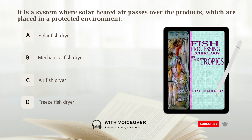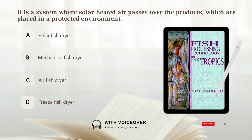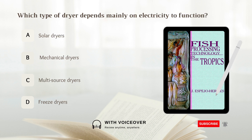It is a system where solar heated air passes over the products, which are placed in a protected environment — this describes a solar dryer. What type of dryer depends mainly on electricity to function? A. Solar dryers. B. Mechanical dryers. C. Multi-source dryers. D. Freeze dryers. The answer is B, mechanical dryers.